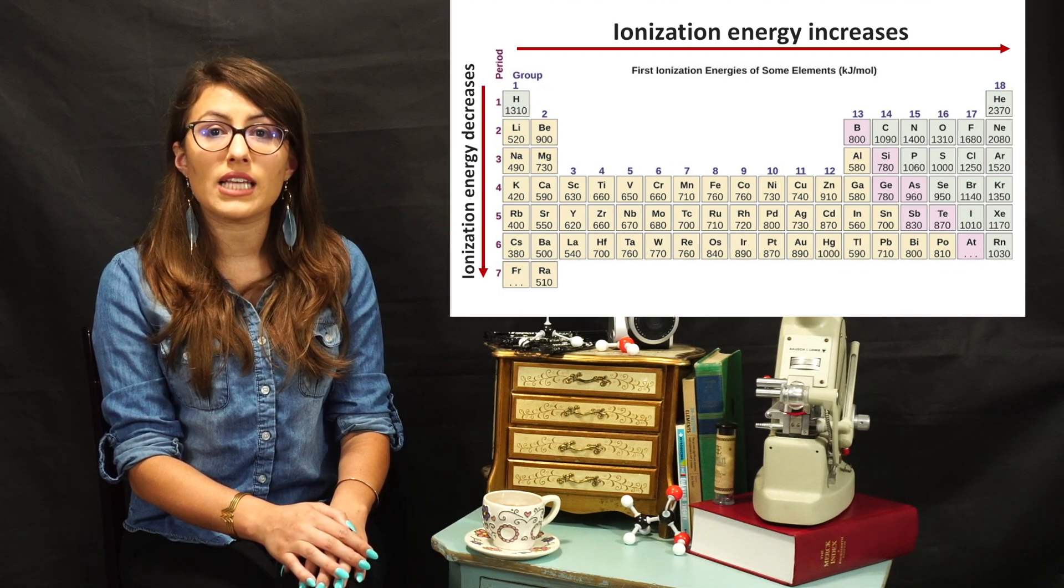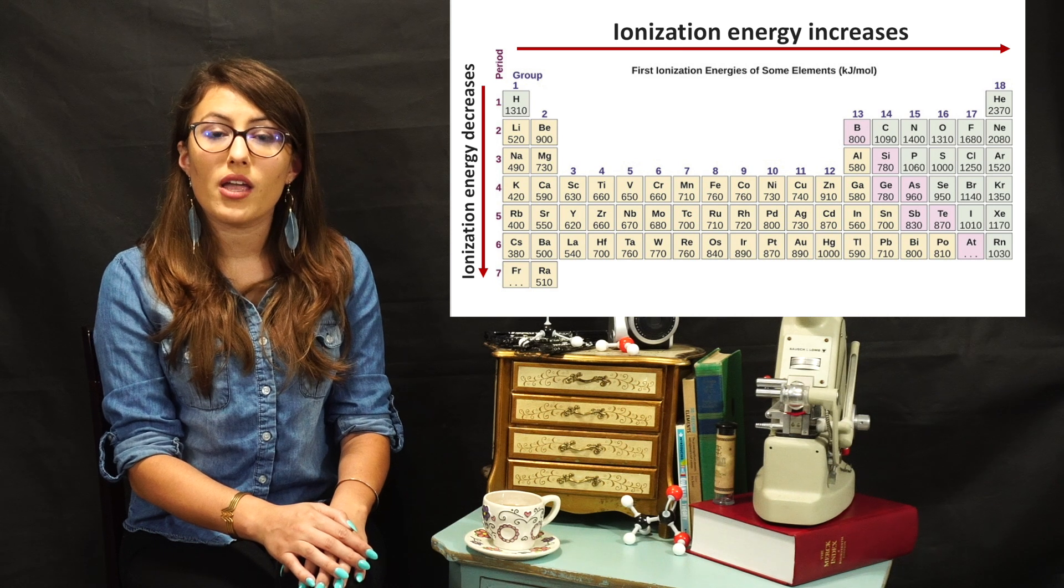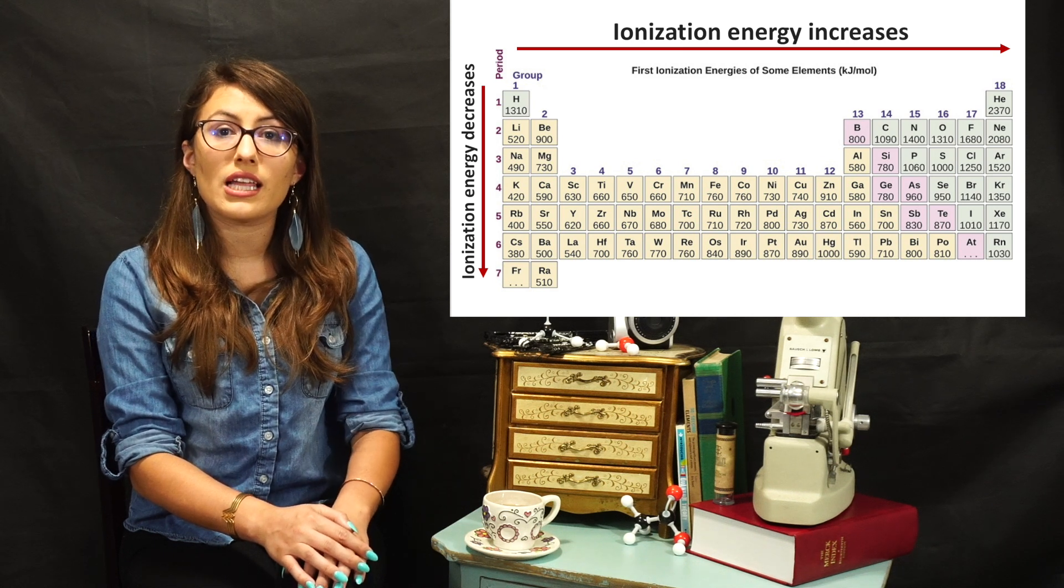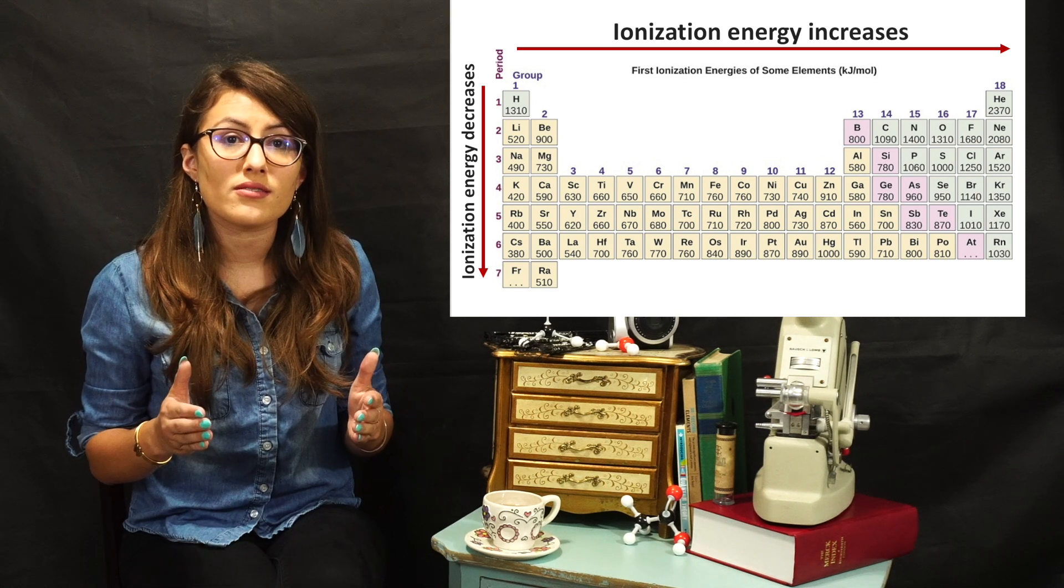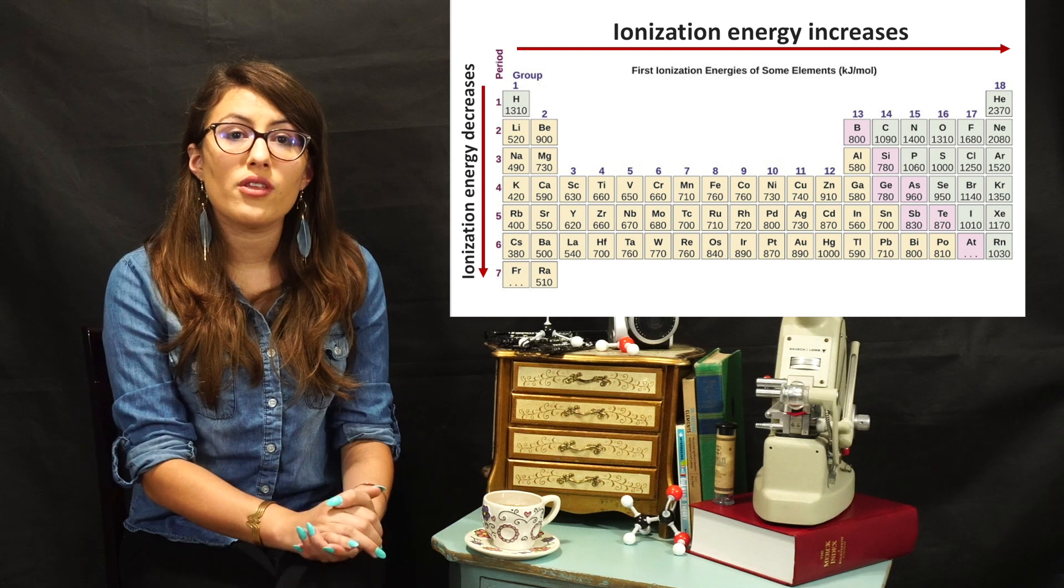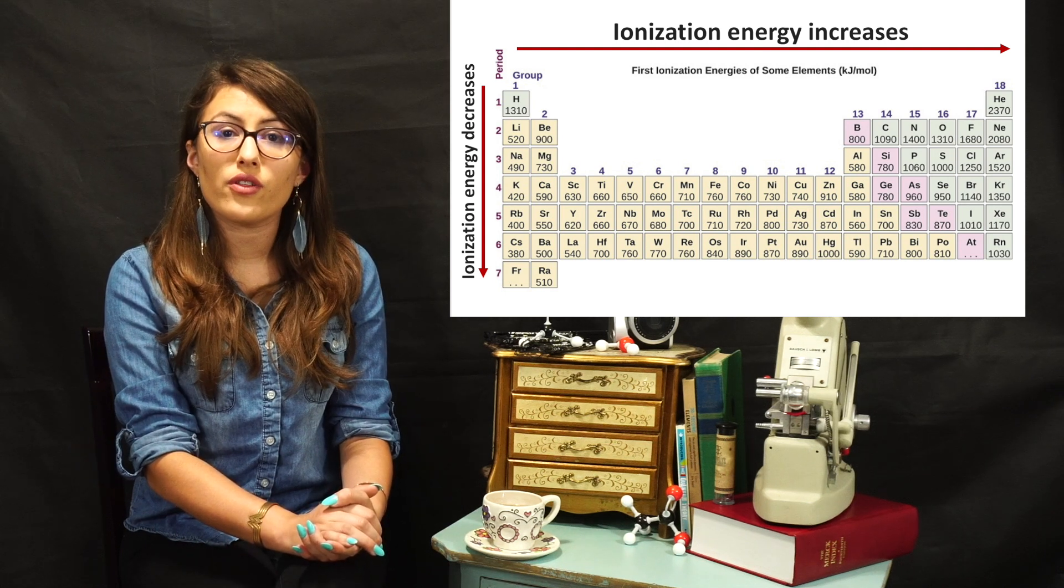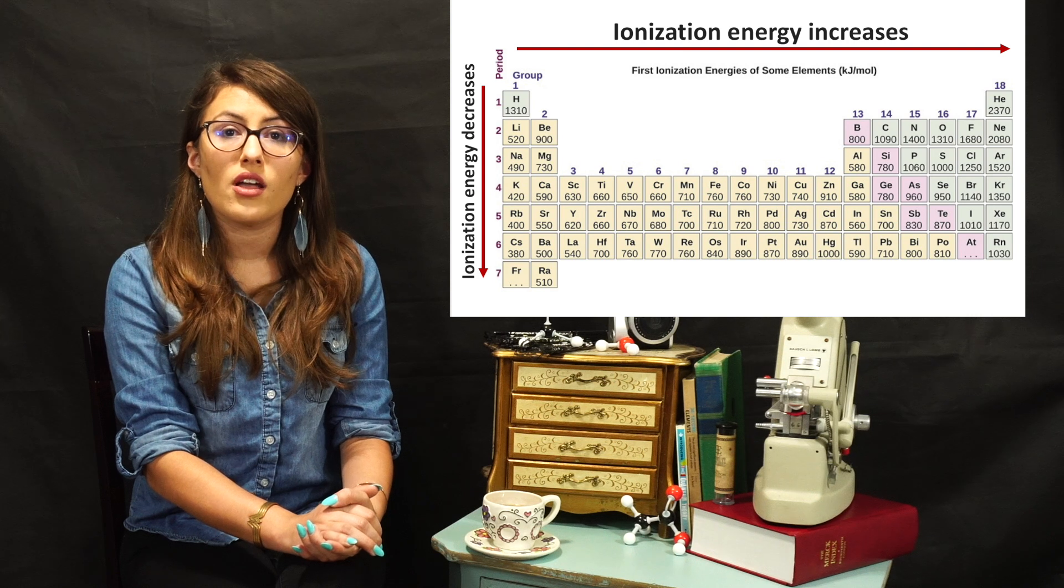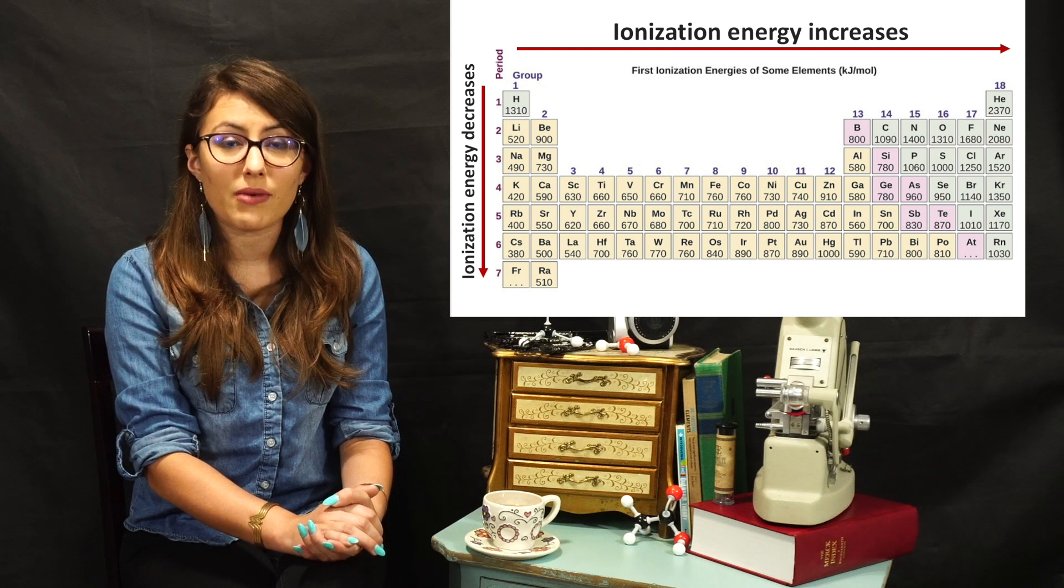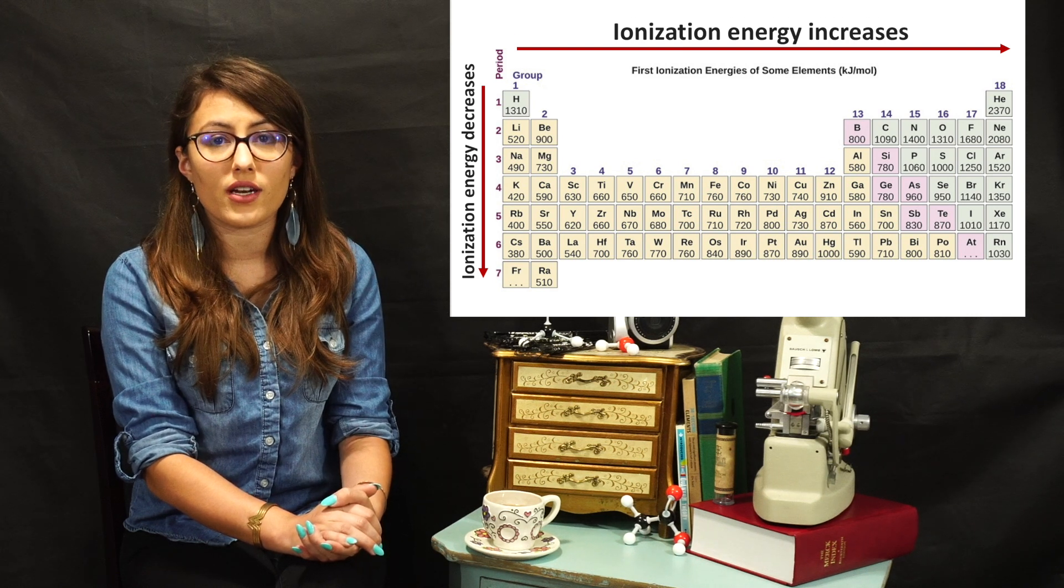Ionization energies also decrease as you go down the periodic table, because if we think about the distance the electrons are from the nucleus, as you move down the group, the atomic radius also increases. Consequently, the further electrons are from the nucleus, they are held less tightly, thus making them have lower ionization energies.